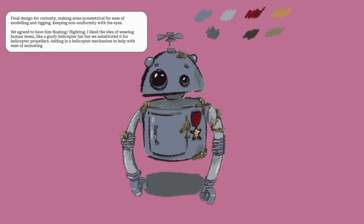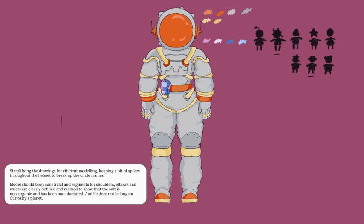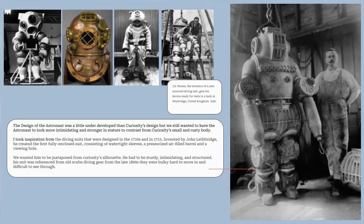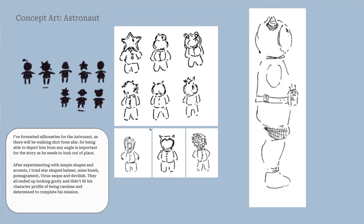His body is simplified for modelling and rigging purposes. The astronaut design was a little underdeveloped, but we knew we wanted him to juxtapose from Curiosity's silhouette. He had to be sturdy, intimidating and structured. His suit was referenced from old scuba gear from the late 1800s — they were bulky and hard to move in and difficult to see through. I played around with simple shape language, but also wanted to be more creative in terms of what the helmet could look like, playing around with different framing.